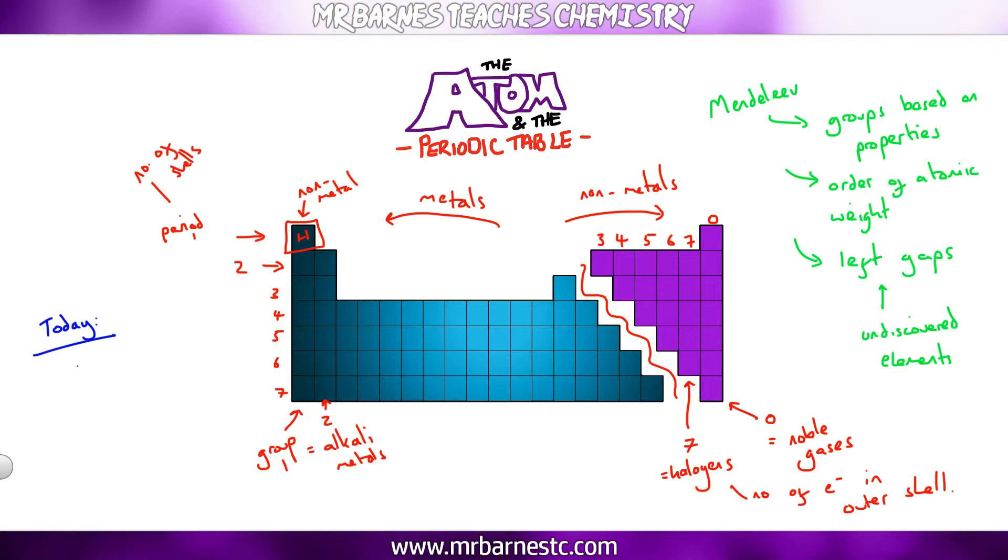Now there are some similarities between Mendeleev's periodic table and ours. Ours are still in groups based on properties. However, we now know that it goes up in order of atomic number, the small number.